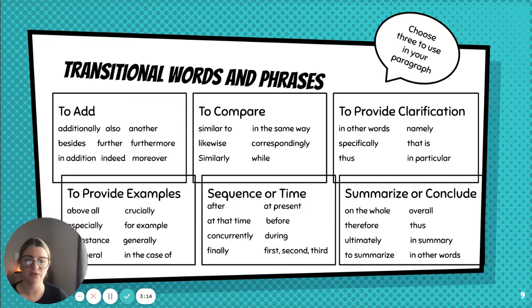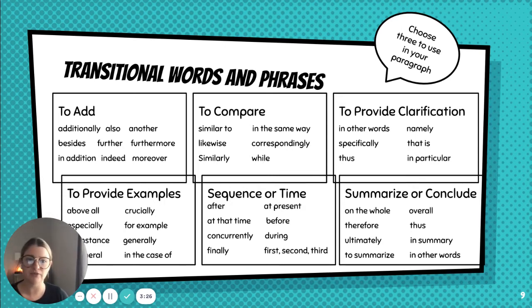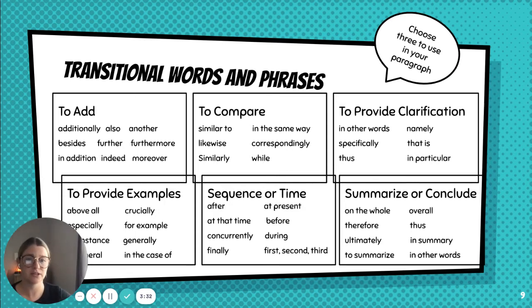For sequence or time: first, second, third — we're always using those — at present, before, after, during, concurrently (which means at the same time). And then to summarize or conclude — this one is for the end of your paragraph — overall, ultimately, thus, in summary, in other words. For example: 'where I want to be in five years is running my own business.' Something like that.